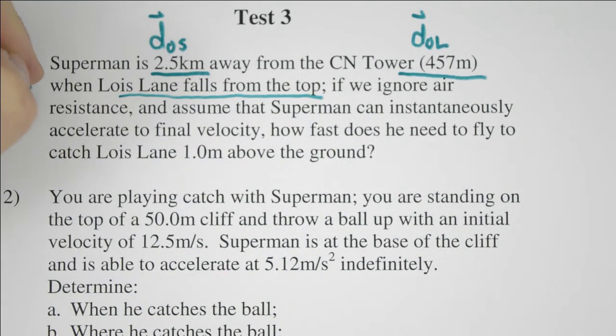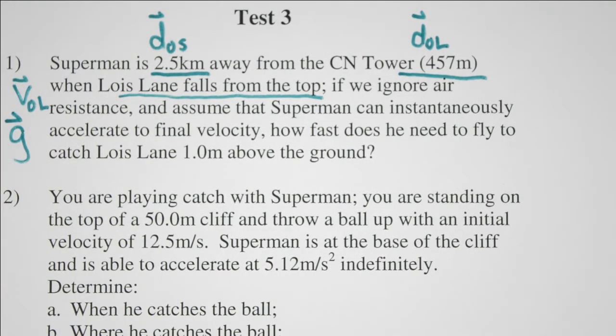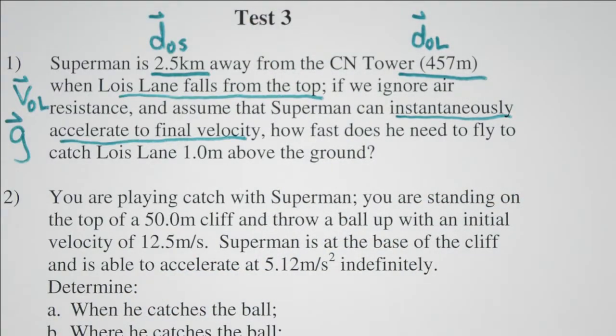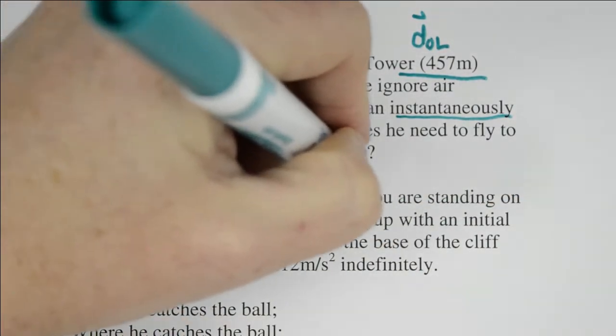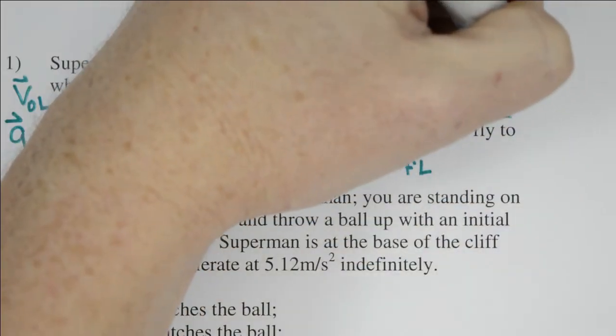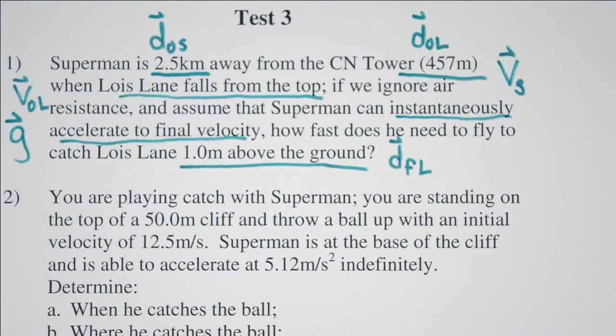She falls from the top, which tells us that her initial velocity is zero. And, of course, she's going to fall under the influence of gravity. We also note that Superman can accelerate to a final velocity instantaneously. And so he's going to fly at a constant speed the entire time. And Lois Lane will be caught one meter above the ground. We're going to look for Superman's speed.